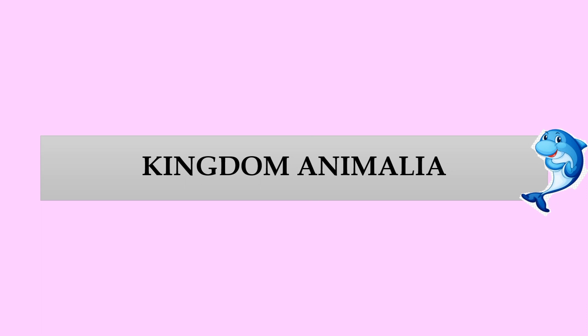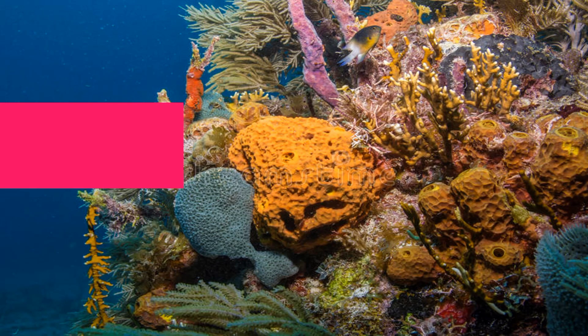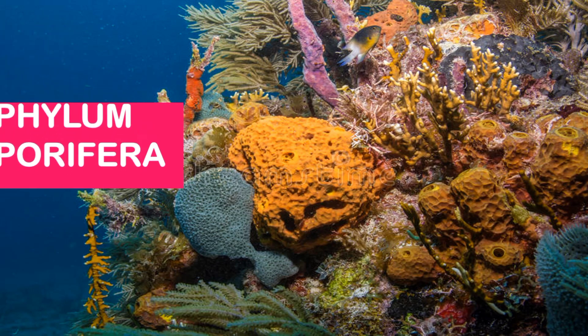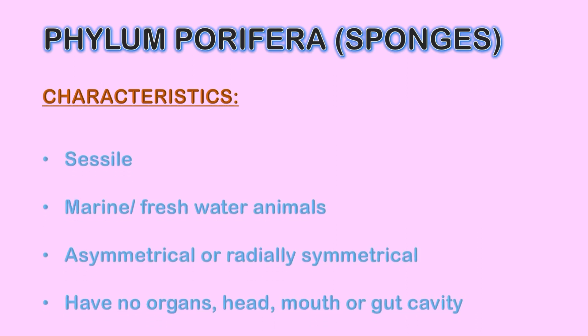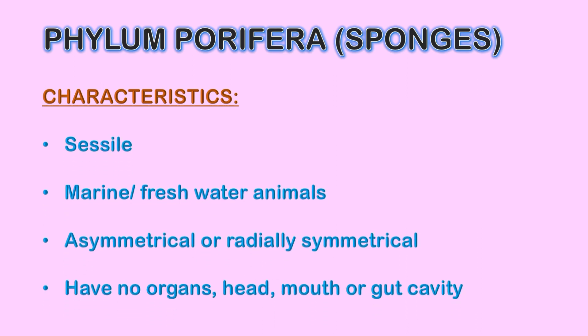Welcome back. In this video we will learn about the characteristics of Phylum Porifera, its structure and function. Phylum Porifera includes sponges. The members of Phylum Porifera are porous, having pores on the overall body surface. They are sessile — immobile or immotile — meaning they cannot move.